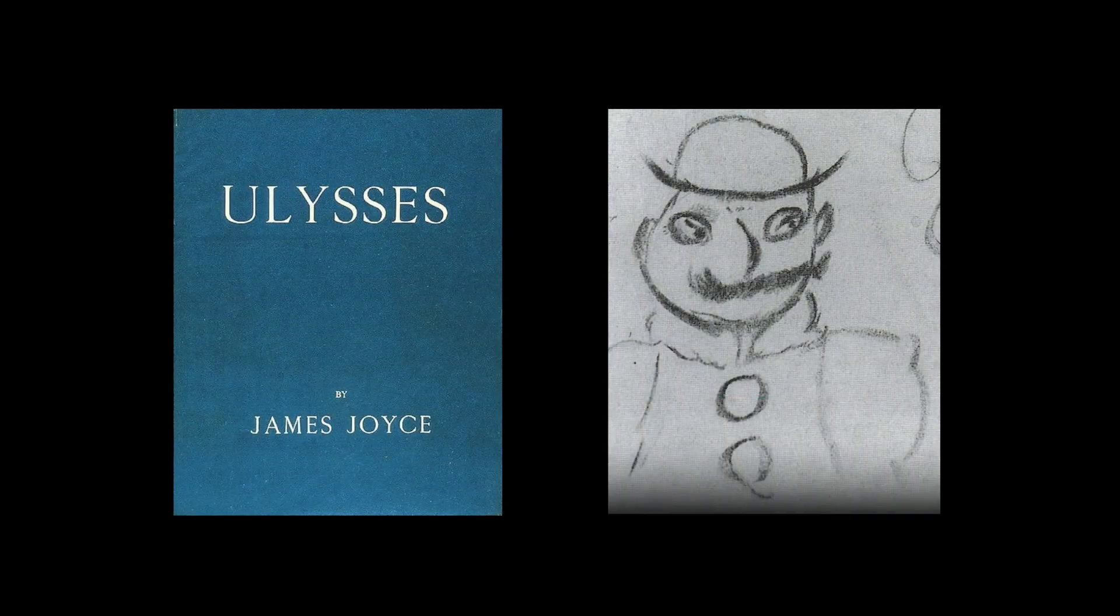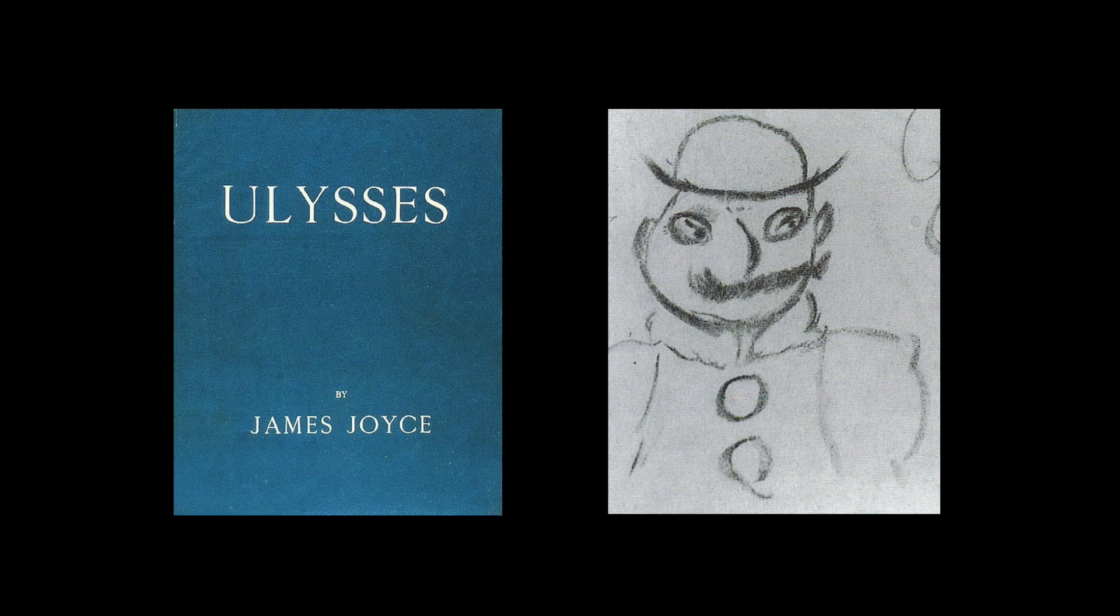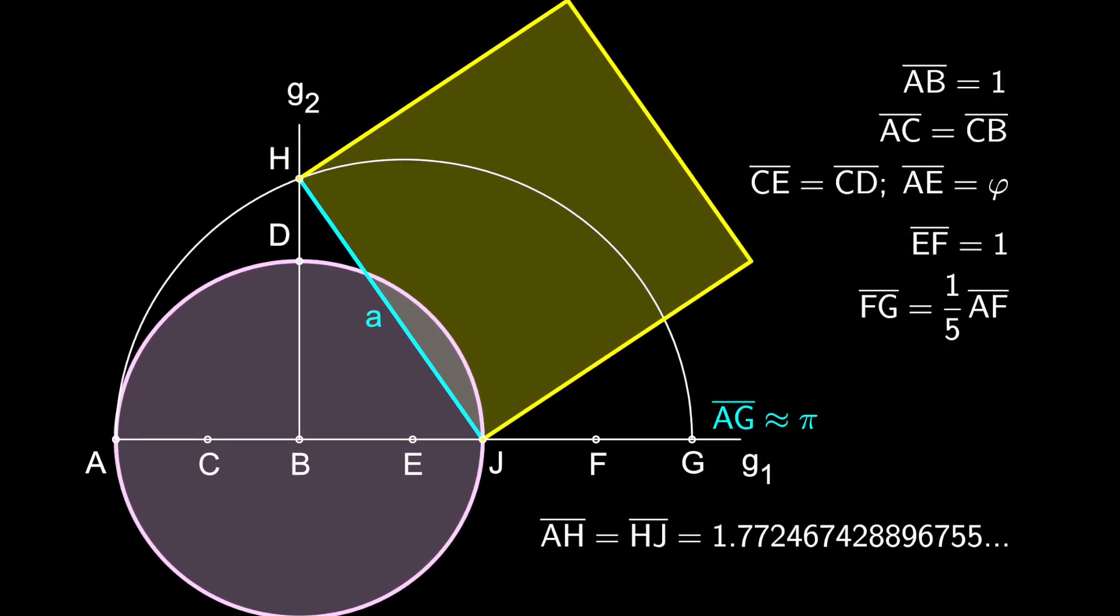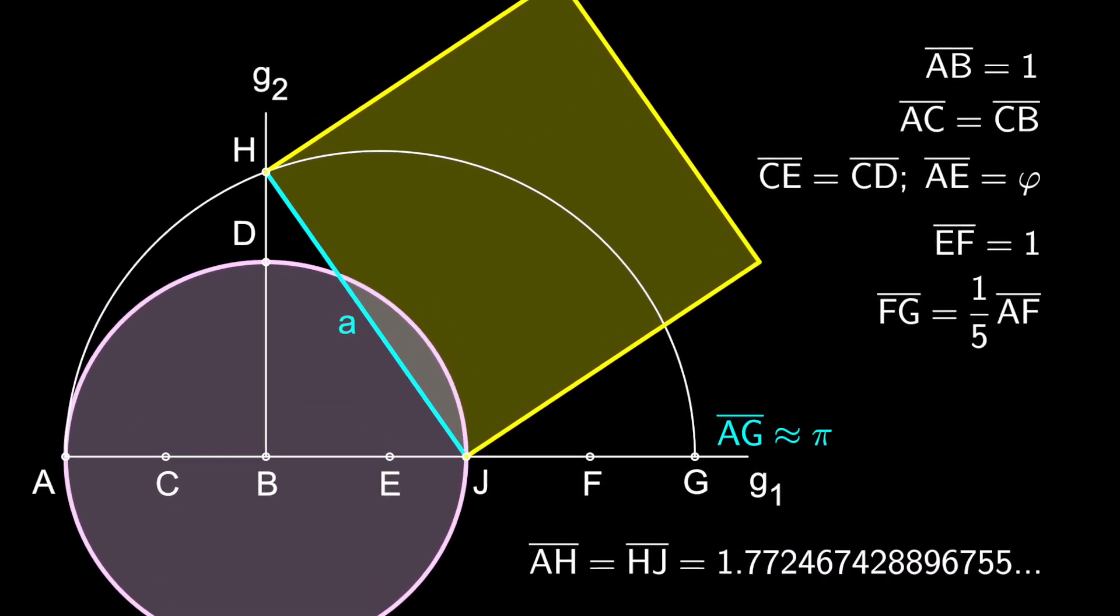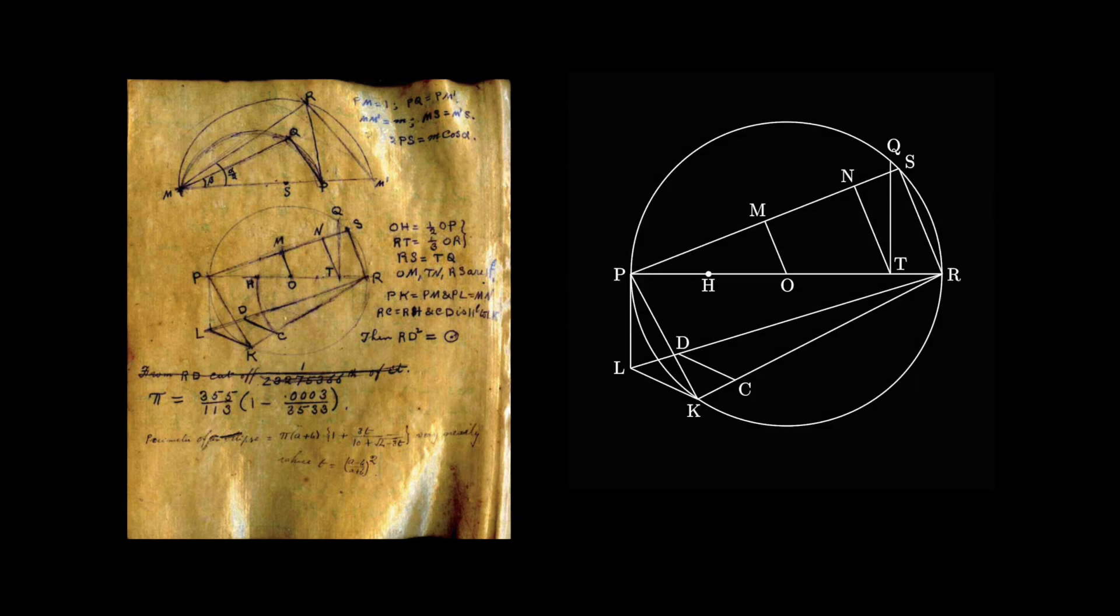In Ulysses, the character Leopold Bloom tries in vain to square the circle. There have been, however, valid approximations over the years. The great mathematician Ramanujan devised a construction in 1914 with Pi accurate to 8 decimal places.